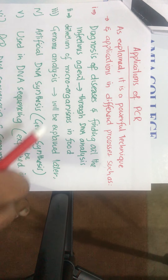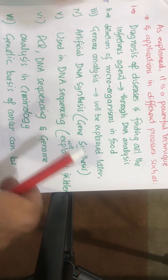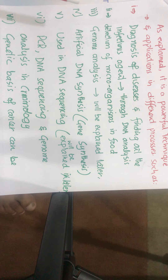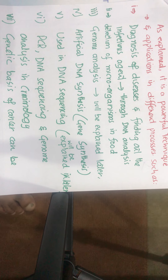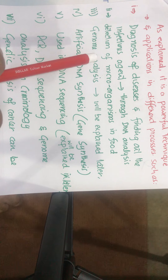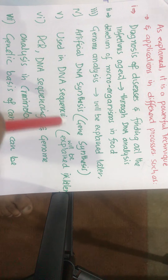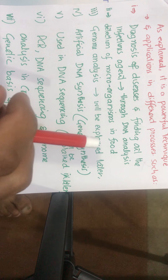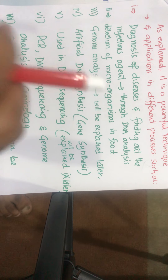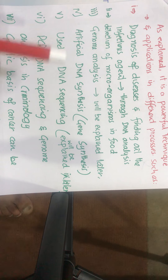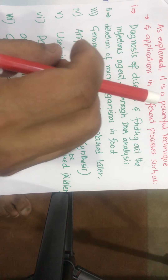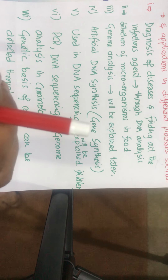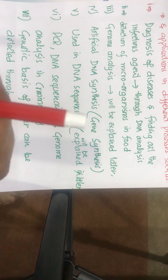The next application is detection of microorganisms in food. If we have food, we can find out which microorganisms are causing food poisoning or food rotting. We extract DNA from the food, then use primers specific to suspected fungi or bacteria and amplify the DNA. Whichever organism's primers cause amplification tells us which specific bacteria or fungi is responsible for the food decay.